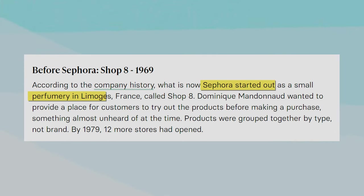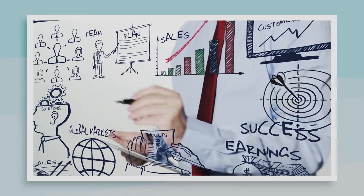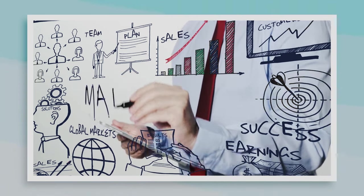The original Sephora wasn't the sprawling beauty haven we know today. It was a modest perfumery named Shop 8, nestled in Limoges, France. However, Mandonaud was not one to settle for the ordinary; he had grander plans in store.